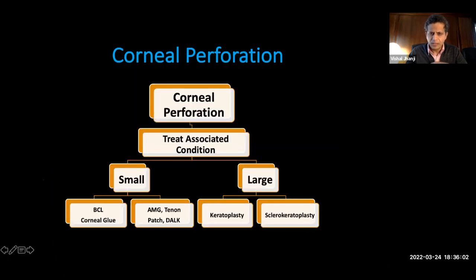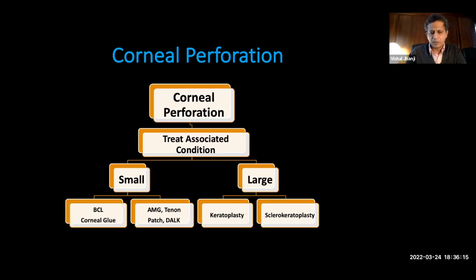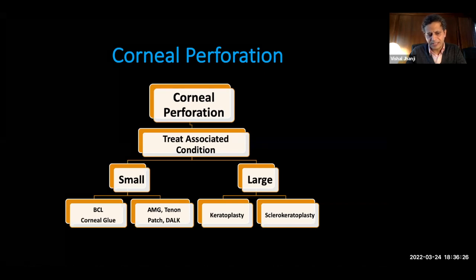In corneal perforation, in general, we treat the associated conditions. For small perforations, you can do a bandage contact lens with corneal gluing. You can also do an amniotic membrane transplant, a tenons patch, or a DALK. For large perforations, you do a therapeutic keratoplasty or a therapeutic sclerokeratoplasty, which is when the perforation is actually extending beyond the limbus.